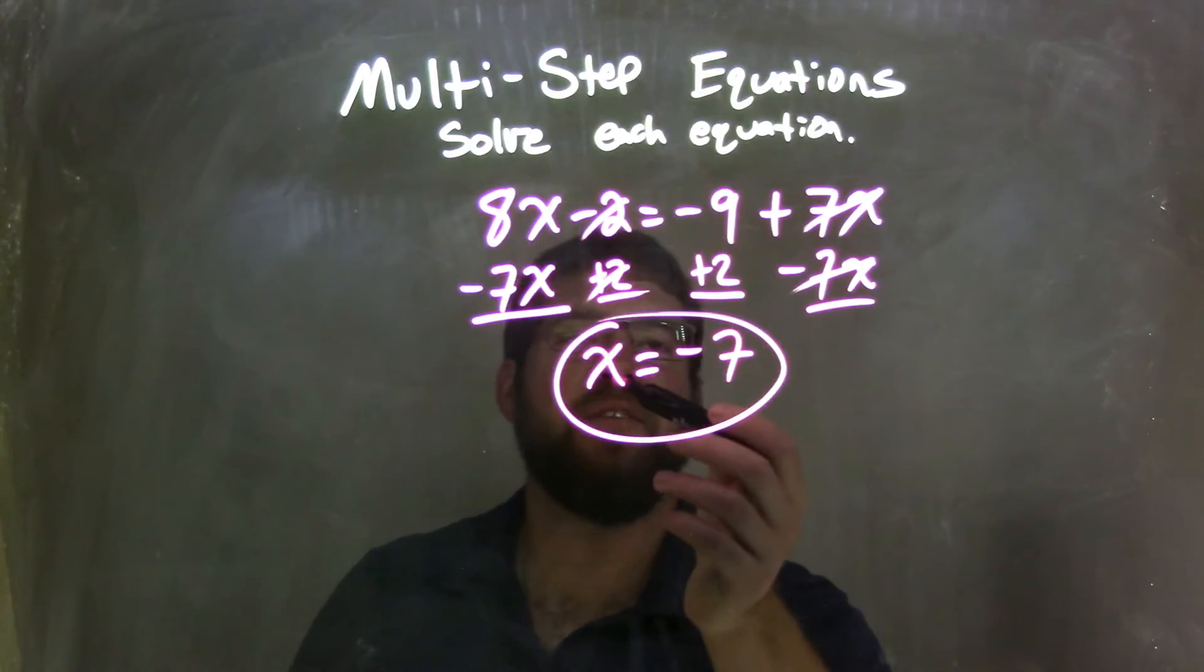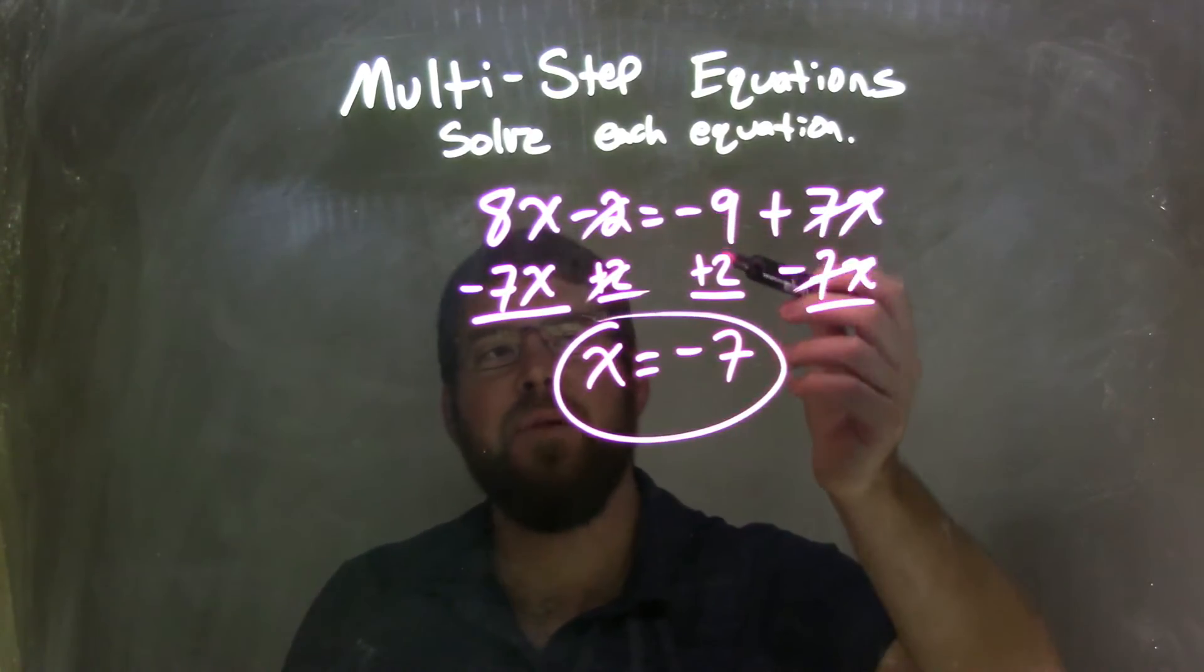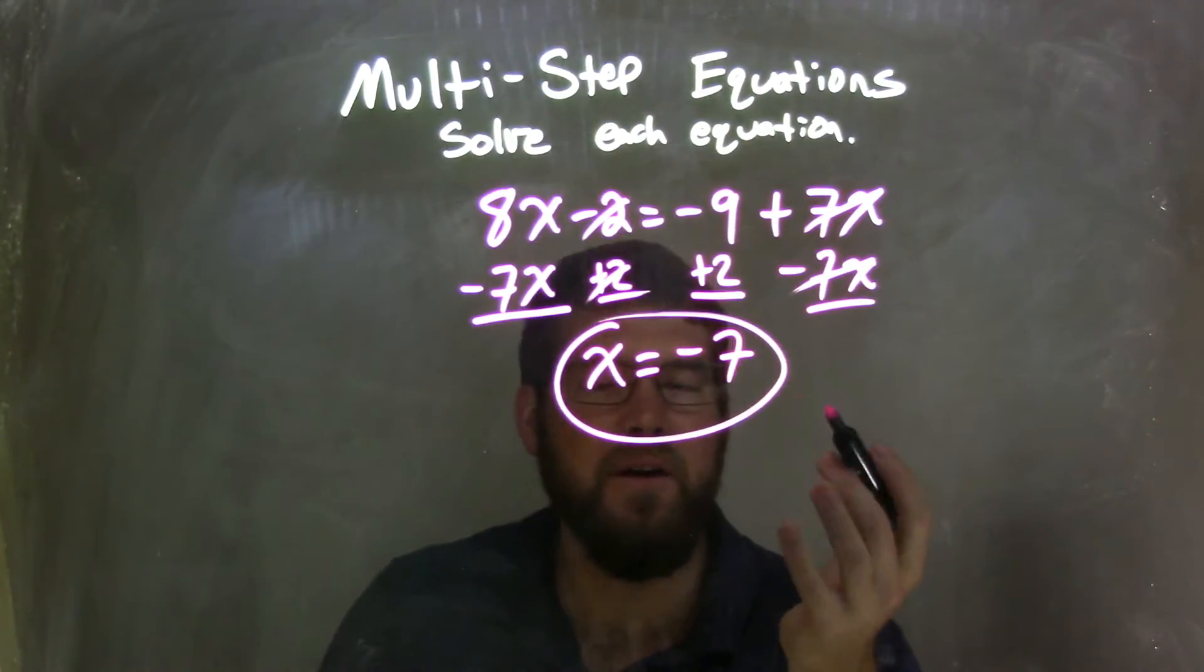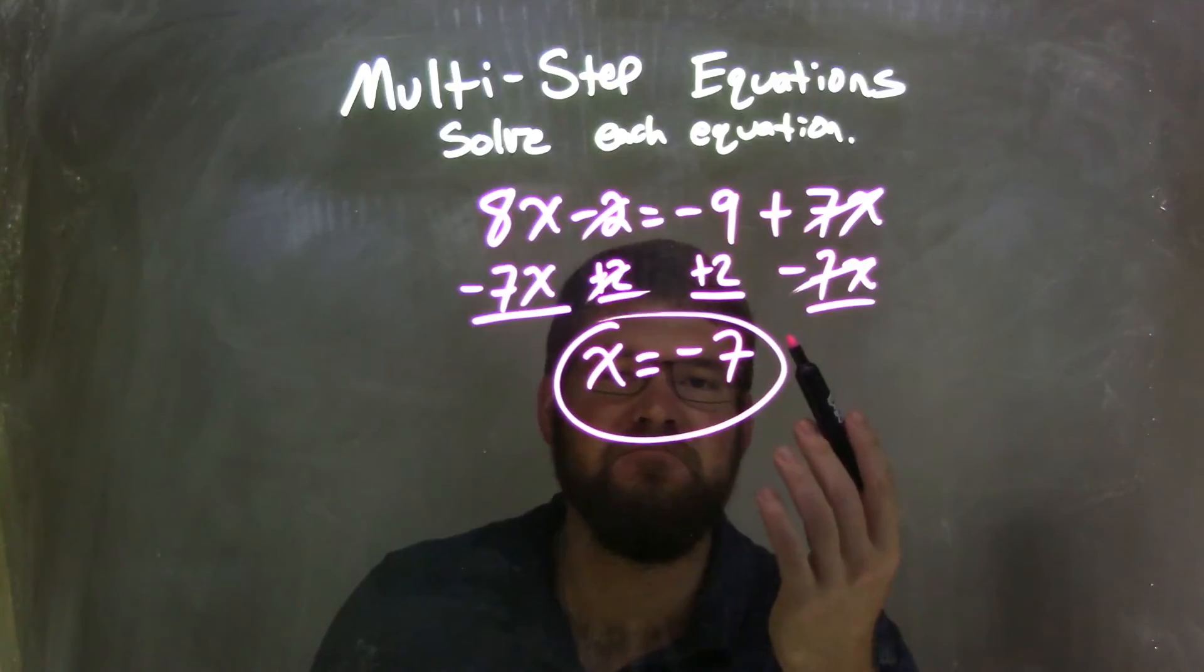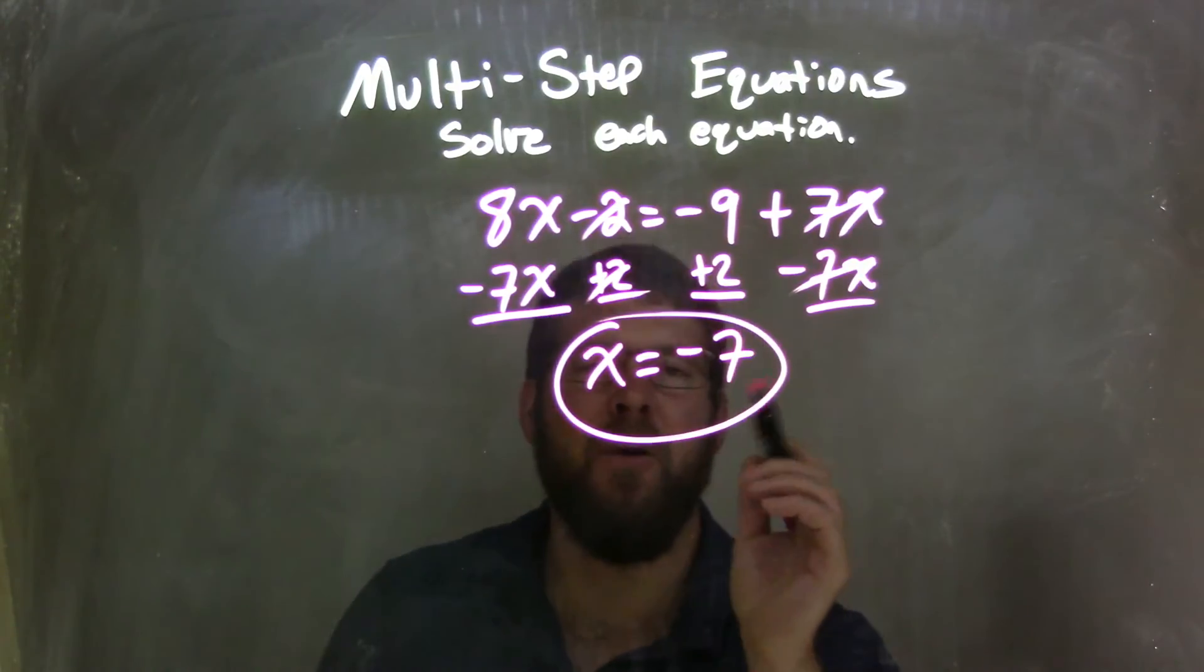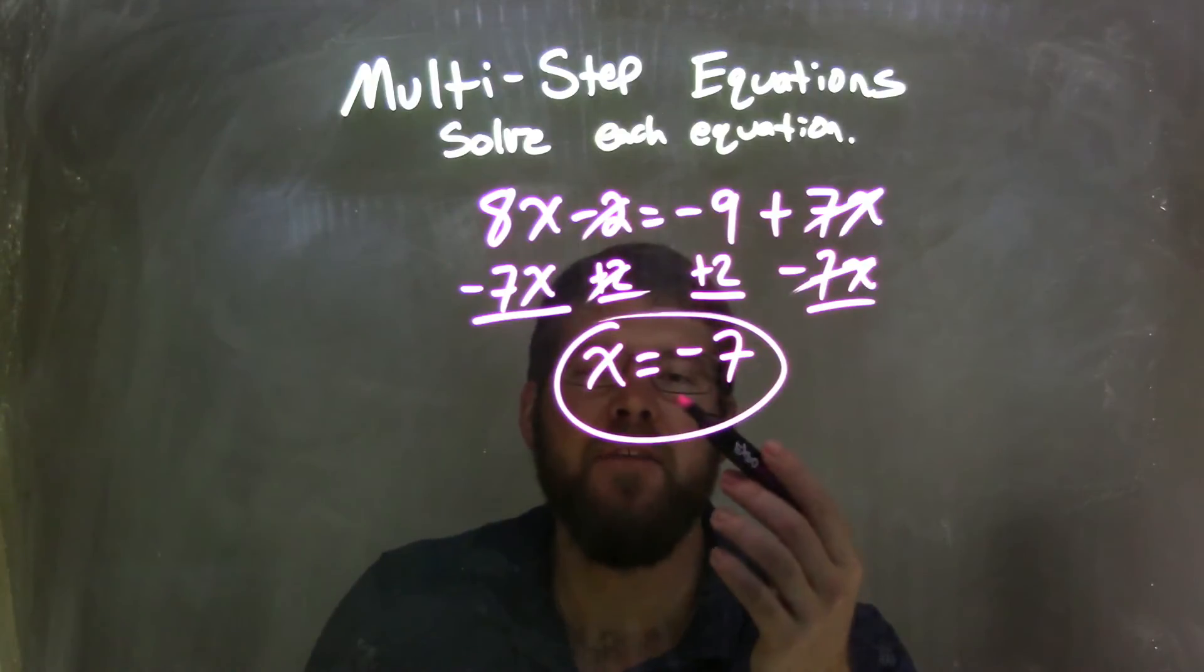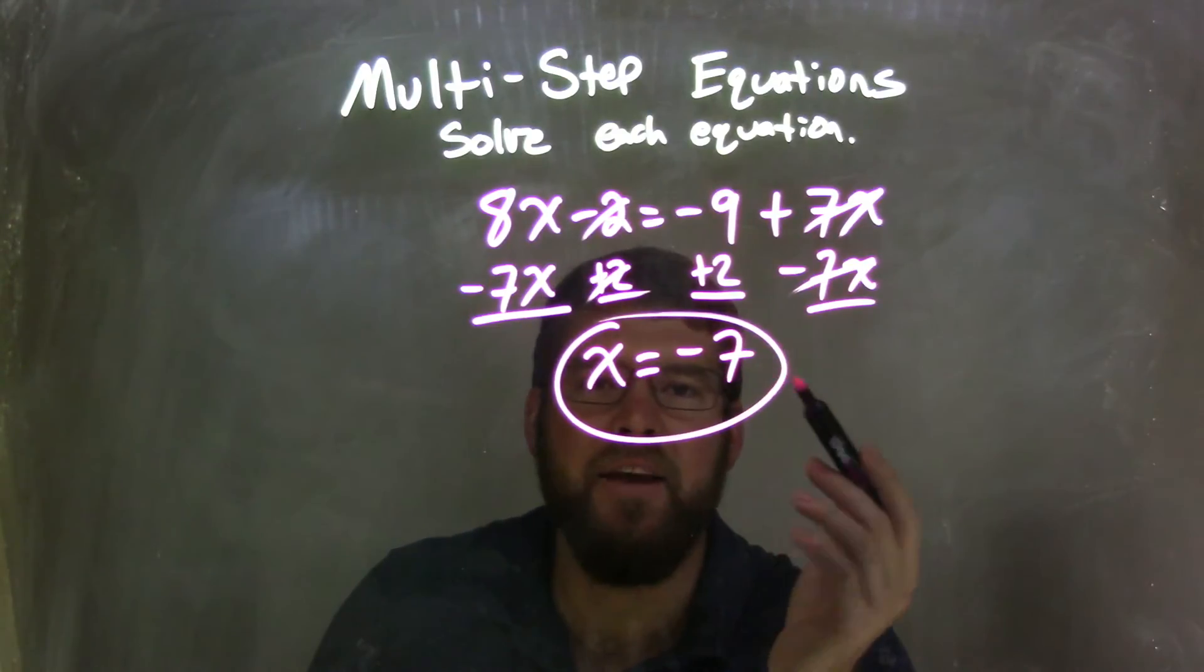8x minus 7x is just x, and negative 9 plus 2 is negative 7. It turns out in this problem that was it. We can kind of do that in one big step, but it's really two steps inside. We get our final answer of x equals negative 7.